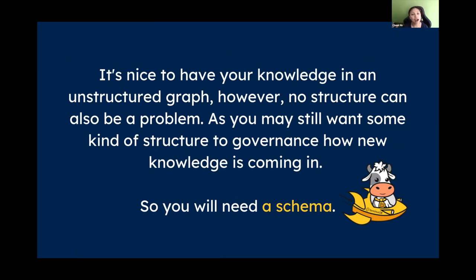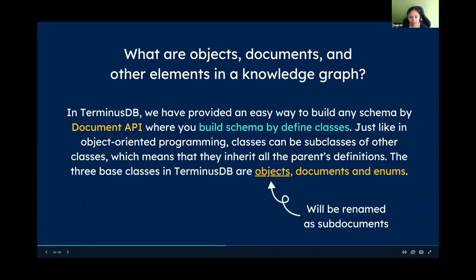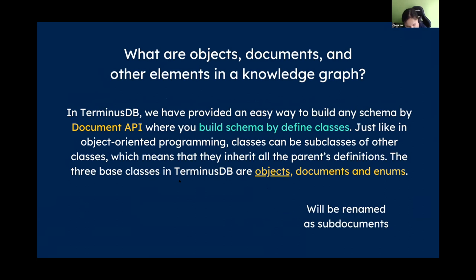If everything is unstructured, you have total flexibility, but the problem is if anybody can dump anything in the database, you don't know what they are. That's why you need some kind of governance and structure — which is a schema. In TerminusDB, when we first designed it, we had objects, documents, and enums. We tried to follow the naming convention of the semantic graph community, but we realized that was confusing for developers and new users.